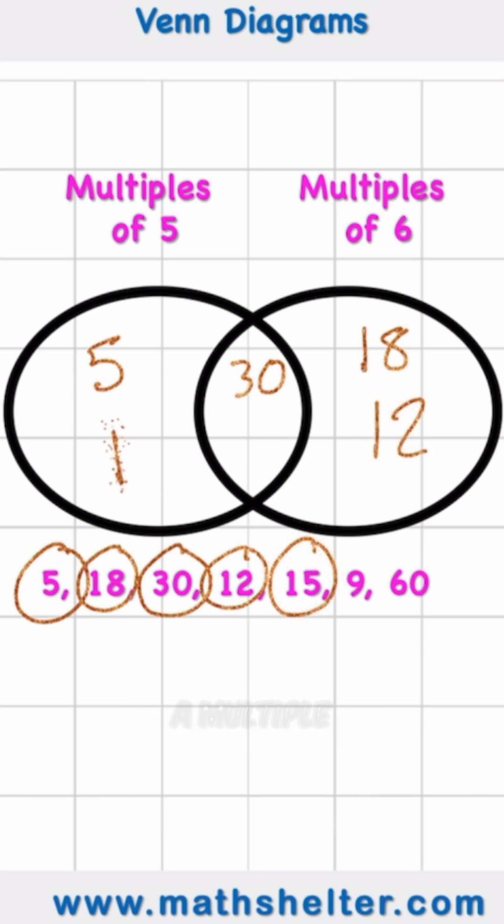And then I have 15, which is only a multiple of 5. Then I get this little tricky number, 9. Where's 9 going to go? It's not a multiple of 5 and it's not a multiple of 6. So guess what? It's going to sit on its own like a little loser outside the circle.